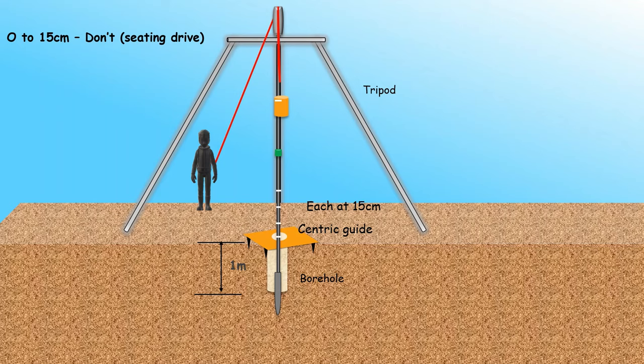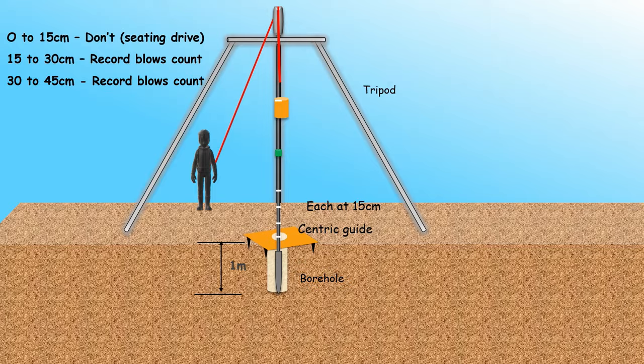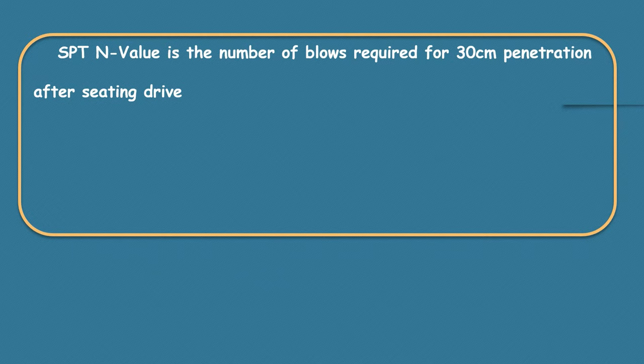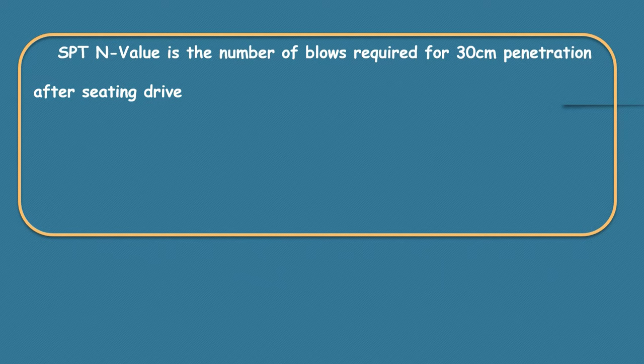Here blows required for first 15 cm penetration is not considered as it is a seating drive. Blows required for 2nd and 3rd 15 cm, that is from 15 to 30 cm and from 30 to 45 cm, is recorded and that gives n value recorded. So SPT n value is the number of blows required for 30 cm penetration after your seating drive.